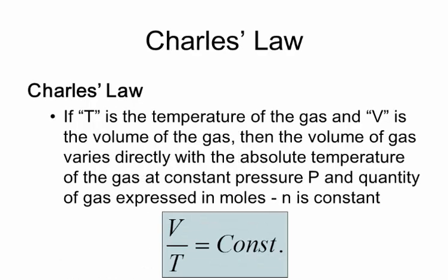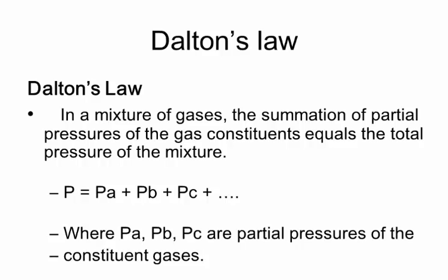Charles' law states that the volume of a gas varies directly with the absolute temperature of the gas at constant pressure. So V over T equals a constant. If in the initial state the volume is V1 and temperature is T1, and in the final state the volume is V2 and temperature is T2, then V1/T1 = V2/T2.